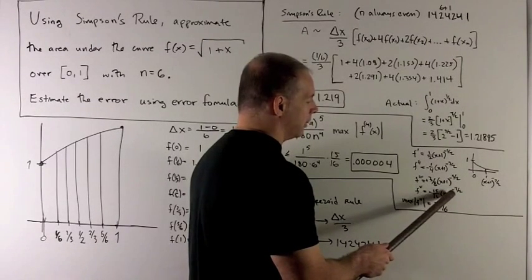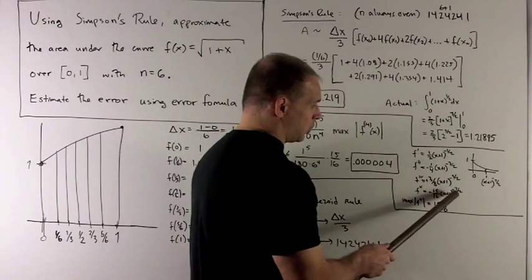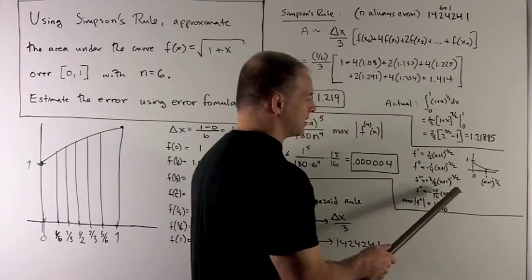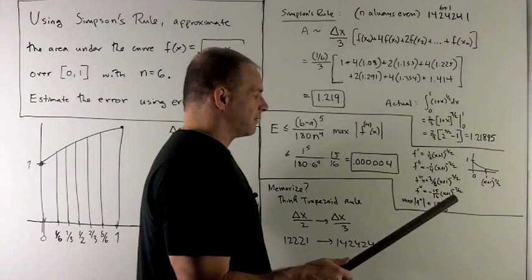If I take x plus 1, okay, if I take x plus 1 to the minus 7 halves, that's the same as 1 over x plus 1 to the 7 halves. So, what happens?